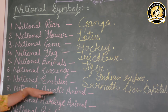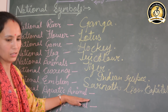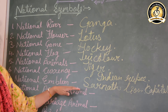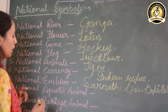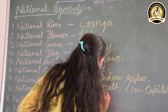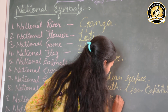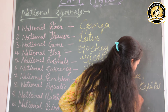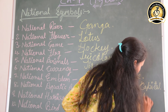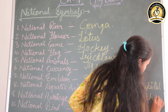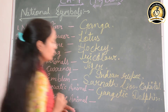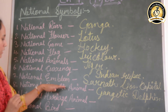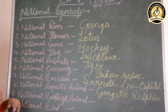The eighth one is the national aquatic animal. What is our national aquatic animal? The Gangetic Dolphin. The Gangetic Dolphin is our national aquatic animal.